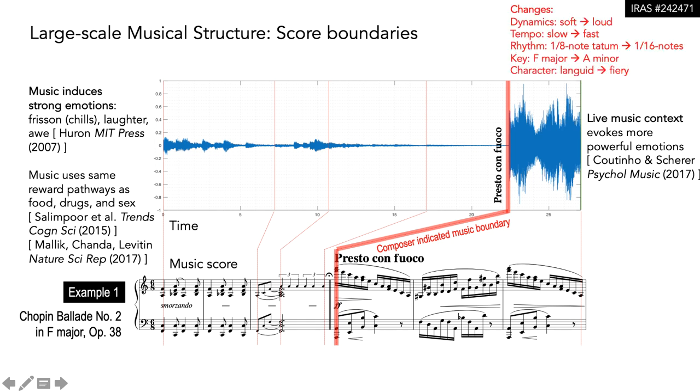The changes include dynamics, the music went from soft to loud. Tempo, it went from practically a standstill to fast. Rhythm, a lilting 6-8 to furious 16th notes. Key, from F major to A minor. Character, from languid to fiery. We will examine the activation recovery interval changes across boundaries such as this.